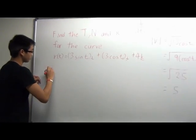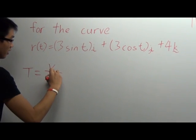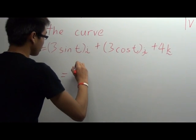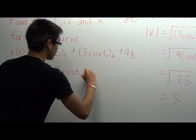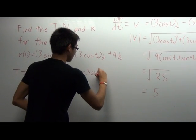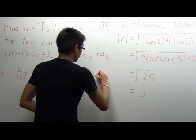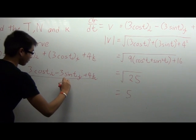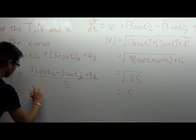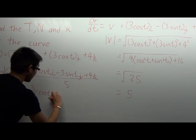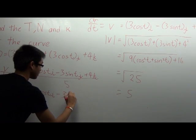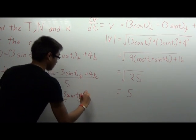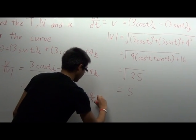So to find T, T equals V over the magnitude of V, which gives us 3 cos(t) i minus 3 sin(t) j plus 4k, all over 5. So in short it becomes (3/5) cos(t) i minus (3/5) sin(t) j plus (4/5) k.